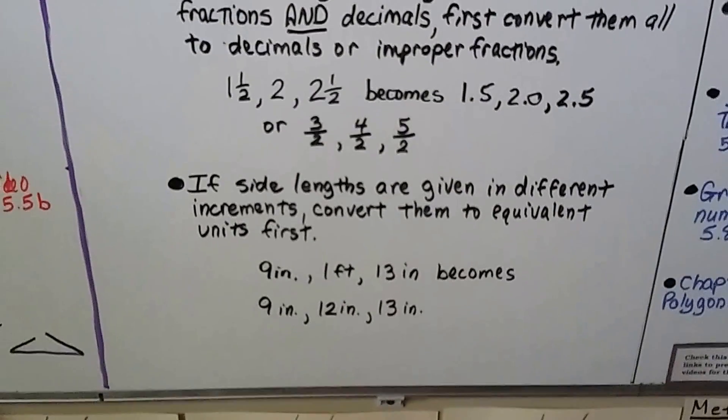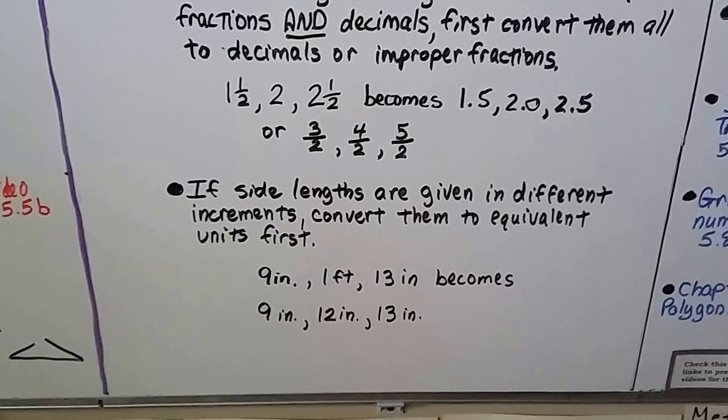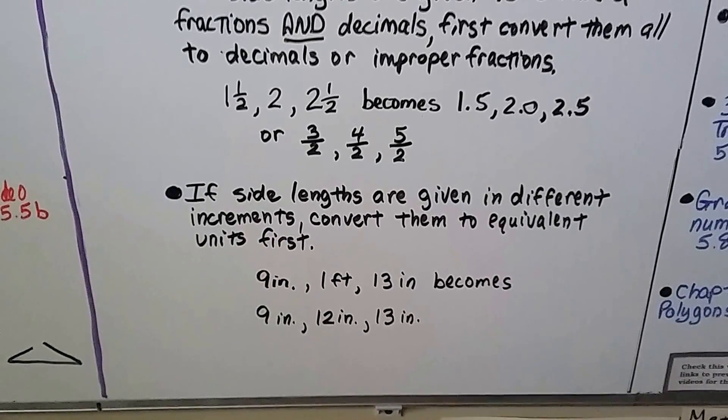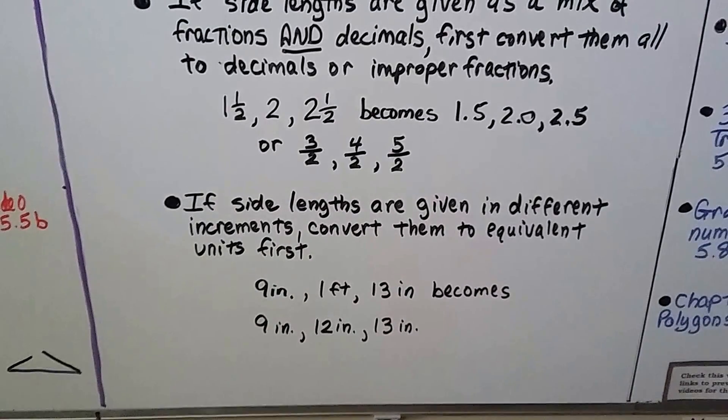If side lengths are given in different increments, convert them to equivalent units first. If you have 9 inches, 1 foot, and 13 inches, make it 9 inches, 12 inches, and 13 inches.